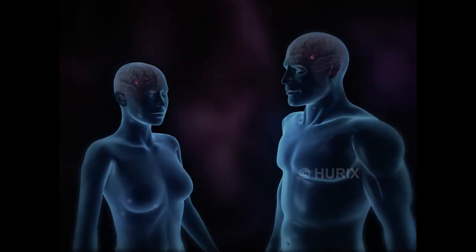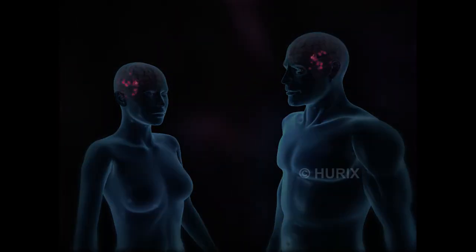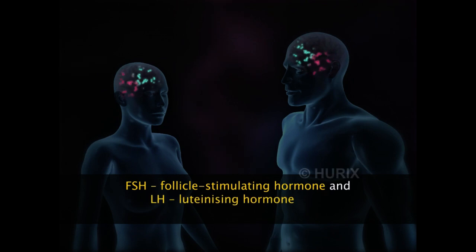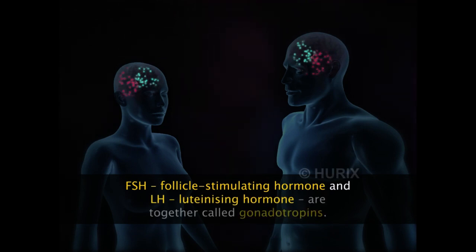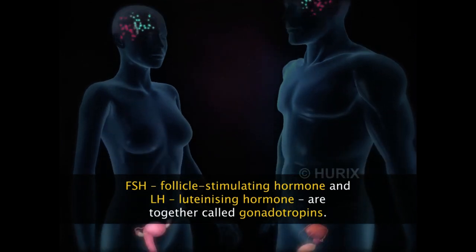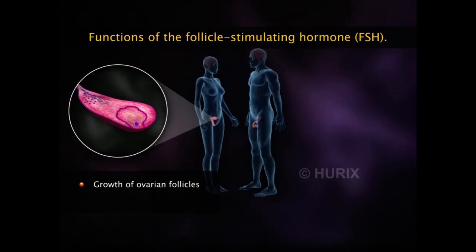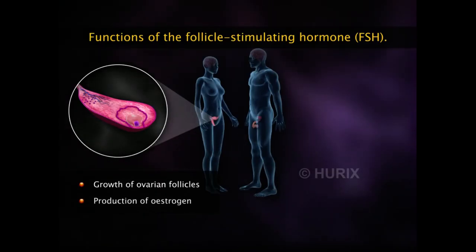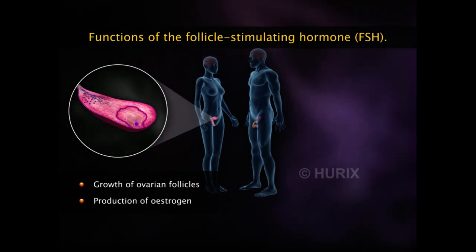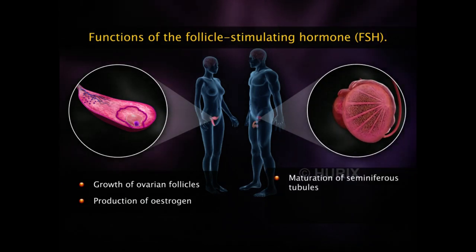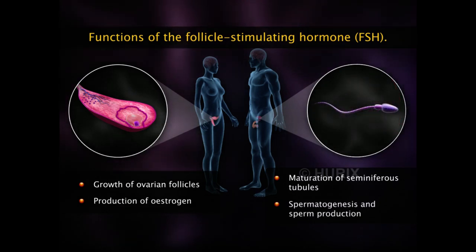Two other hormones of the anterior pituitary are FSH and LH. FSH stands for follicle stimulating hormone and LH stands for luteinizing hormone. Together they are called gonadotropins as they act on the gonads of males and females. In females, FSH stimulates the growth of ovarian follicles and induces production of the female sex hormone oestrogen in the ovaries. In men, FSH stimulates the maturation of seminiferous tubules in the testes and maintains spermatogenesis, leading to the production of sperm.